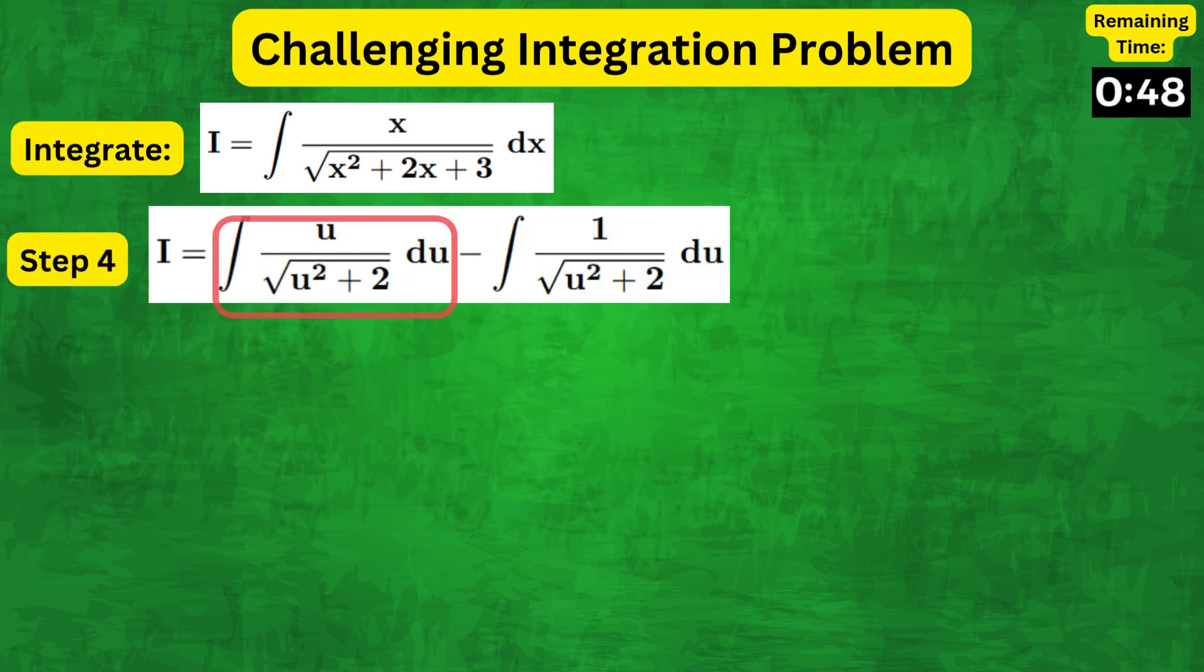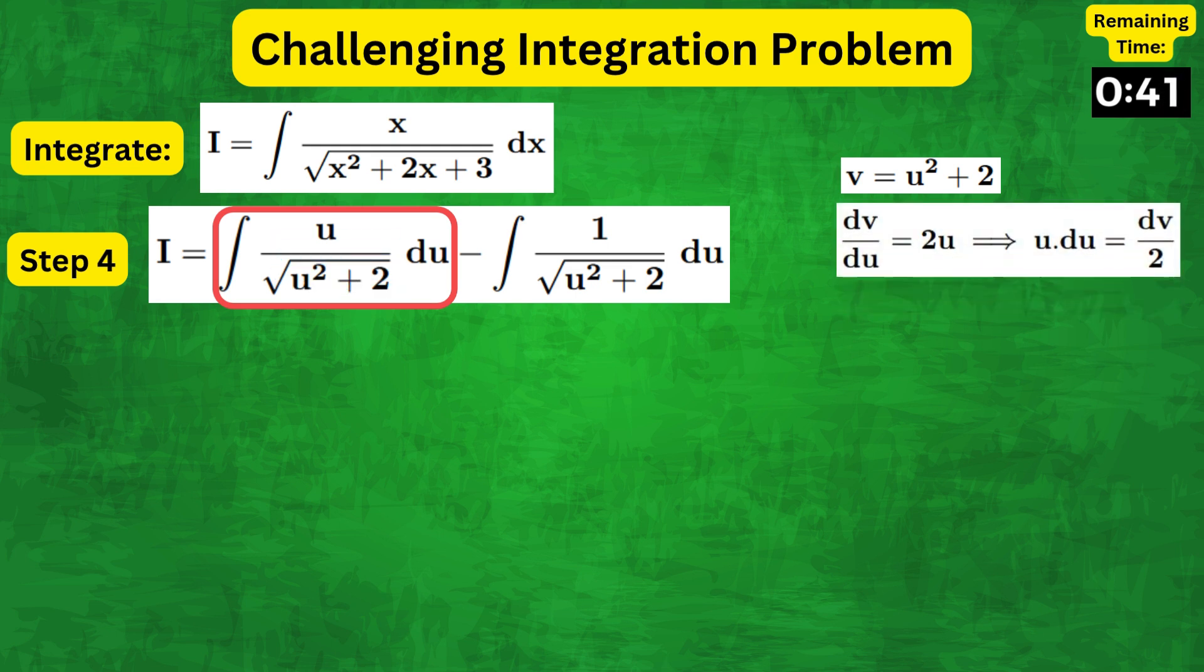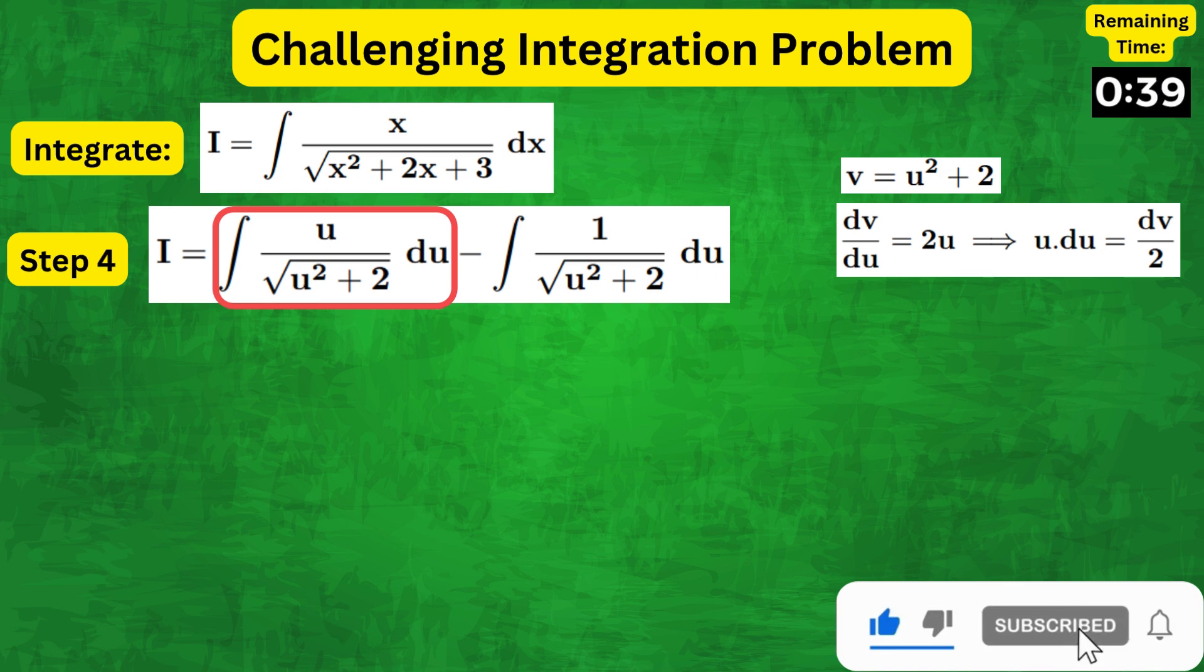That's right, we can use another substitution v equals u squared plus 2. Then, dv by du equals 2u, and therefore u du equals dv over 2.